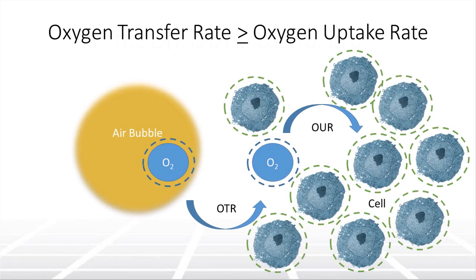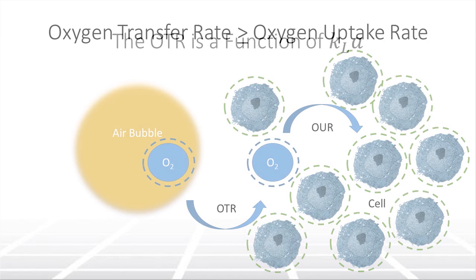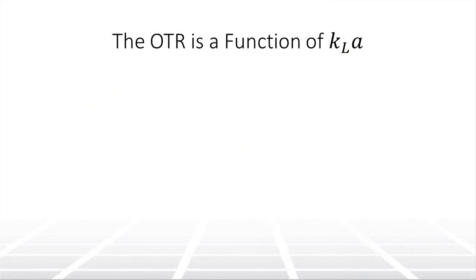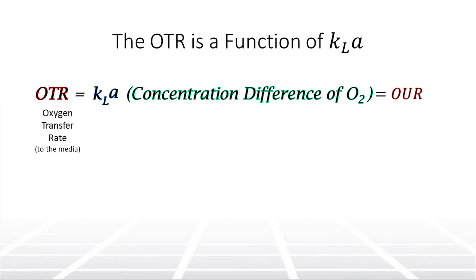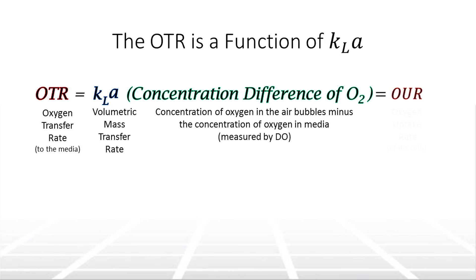Thus, the rate at which oxygen is transferred to the media defines the theoretical maximum cell density. Bioprocess engineers define the rate of oxygen dissolution in terms of a parameter known as KLA, or volumetric mass transfer rate. KLA defines how much oxygen is available to cells for growth, and is necessary for cell culture optimization and scale-up.